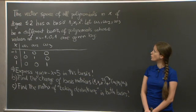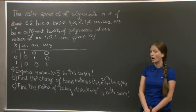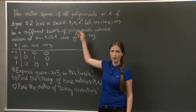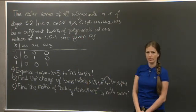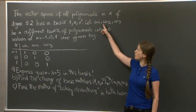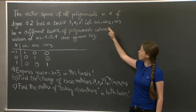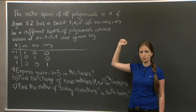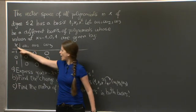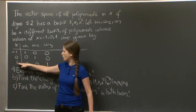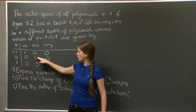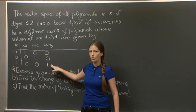The vector space of polynomials in x of degree up to 2 has a basis 1, x, and x squared. That's the obvious basis that you would write for that vector space. But today we're going to consider another basis, w1, w2, and w3. And we don't know what w1, w2, and w3 are explicitly. What we know is that their values at x equals minus 1, 0, and 1 are given by this table here. So there are 1, 0, 0, 0, 1, 0, and 0, 0, 1.